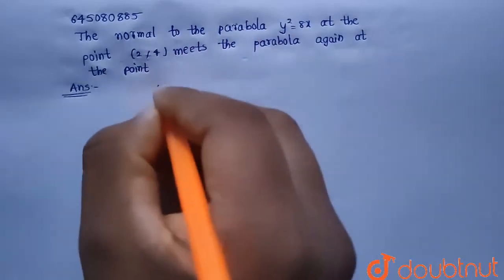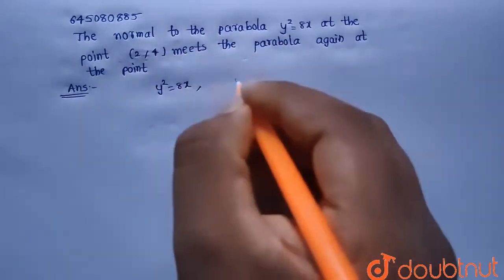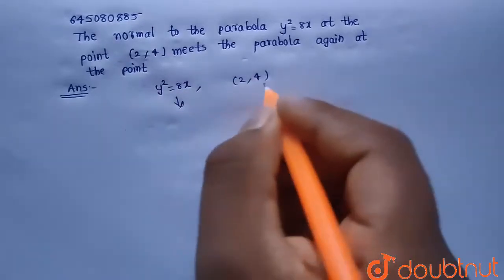So given the parabola equation is y² = 8x and the normal is drawn to the parabola at the point (2,4). So let's find out the slope of the normal at the point (2,4).